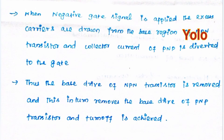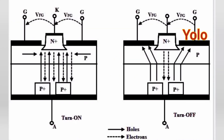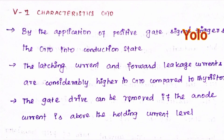When a negative gate signal is applied, excess carriers are drawn from the base region of the NPN transistor and the collector current of the PNP transistor is diverted to the gate. Thus the base drive of the NPN transistor is removed, and this in turn removes the base drive of the PNP transistor, and turn-off is achieved.